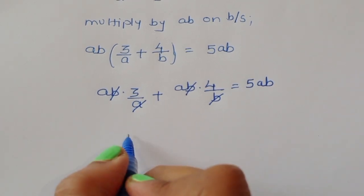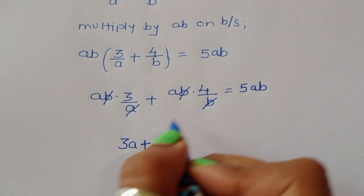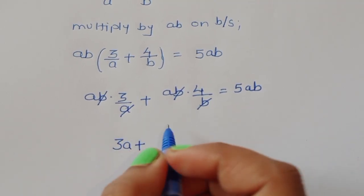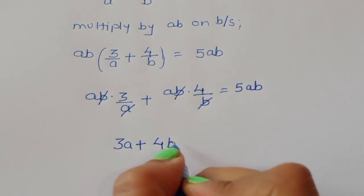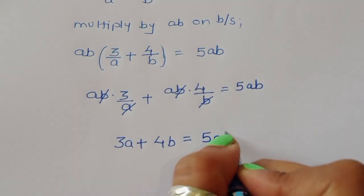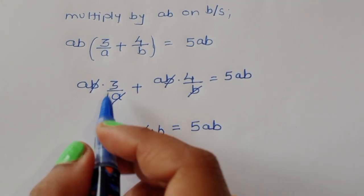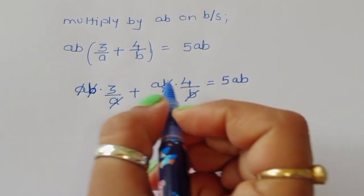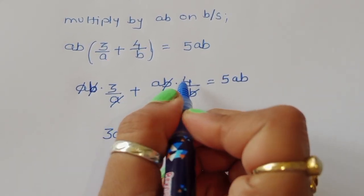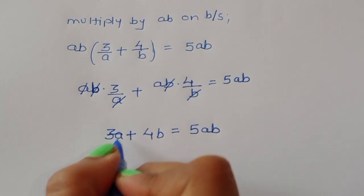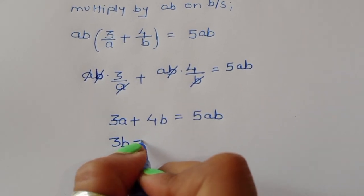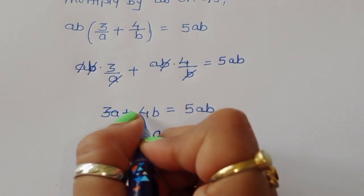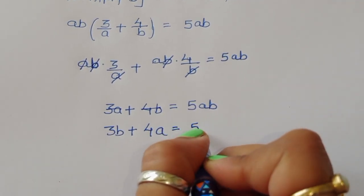So 3b plus 4a equals 5ab. That gives us 3b + 4a = 5ab.